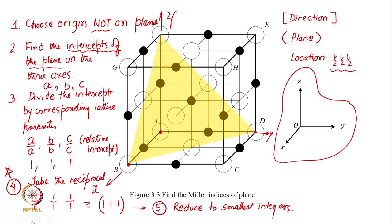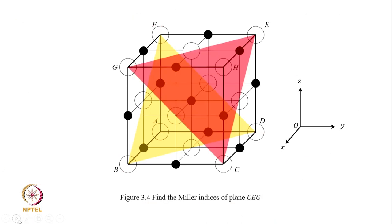Now, start tilting the angles also. Axes are no more orthogonal. What will this plane be? (1 1 1). A plane which cuts at terminal point of A, terminal point of B, and terminal point of C will always be (1 1 1), irrespective of the unit cell size or shape.